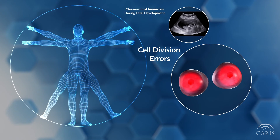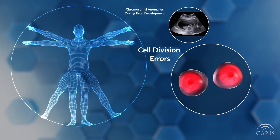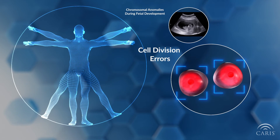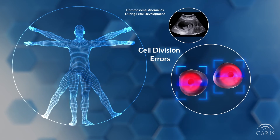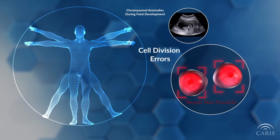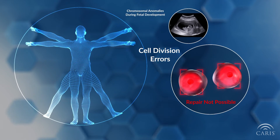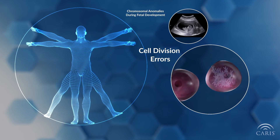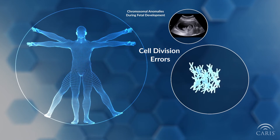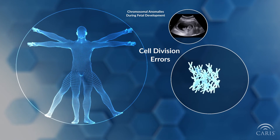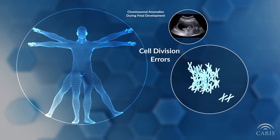In cancer cells, the checkpoints that regulate errors in cell division are sometimes broken, and mistakes can happen that produce daughter cells with too many or too few chromosomes.